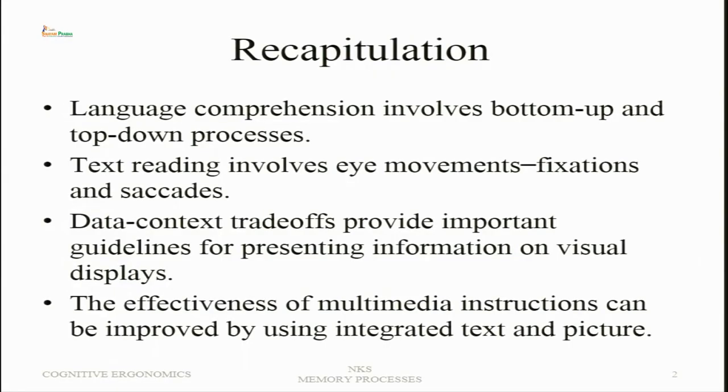Text reading involves eye movement, particularly in the form of fixations and saccades. Eye fixations focus on a particular part of the sentence, and saccades are very fast movements from one part of the sentence to the other. We also looked at data-context trade-offs, from which some important guidelines could be developed for information presentation in visual displays. Finally, we looked at the effectiveness of multimedia instructions by integrating text and images in one presentation, so that there is proximity of the text with the particular operation that has to be carried out.